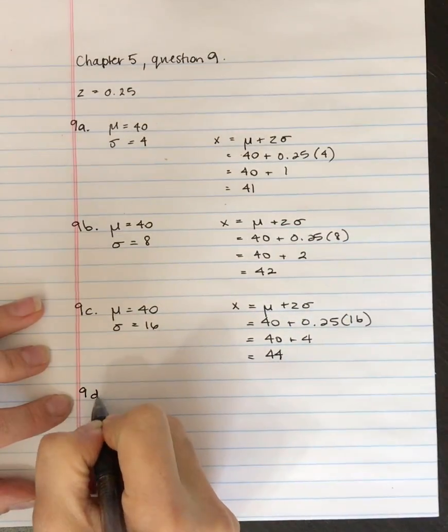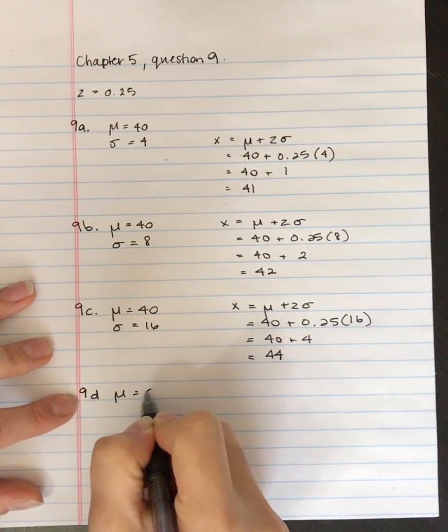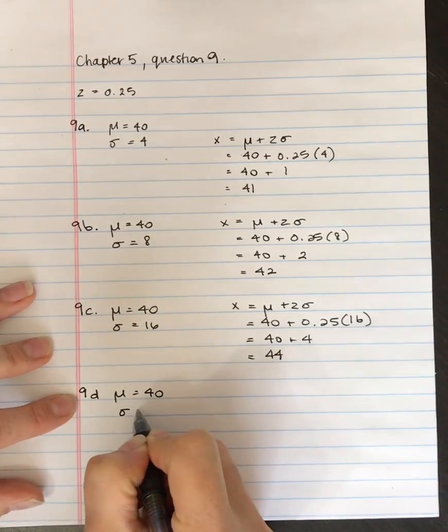The last question here is 9d. The mean is 40, the standard deviation is now 32.